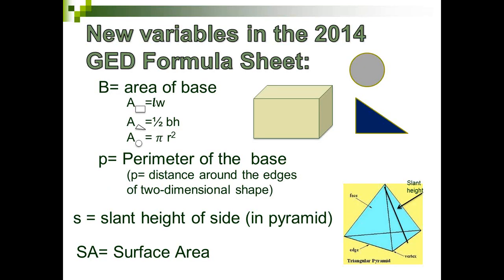New variables in the 2014 GED formula sheet: capital B is the area of the base — for a rectangle it's length times width, for a triangle it's one-half base times height, and for a circle it's pi r squared. Lowercase p equals perimeter of the base, meaning we add the edges of the two-dimensional shape. S means the slant height of the sides — it goes from the apex down to the midpoint of the base. SA equals surface area.